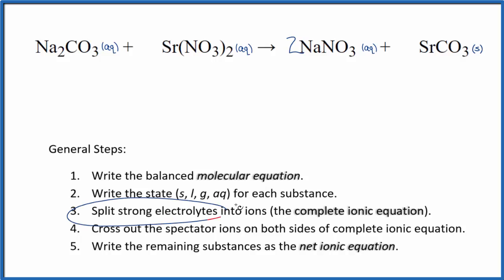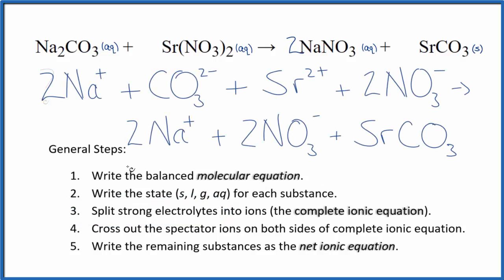Now that we have our states, we can split the strong electrolytes into ions for the complete ionic equation and that looks like this. Once we have the complete ionic equation, we can cross out the spectator ions and they're on both sides of that complete ionic equation.